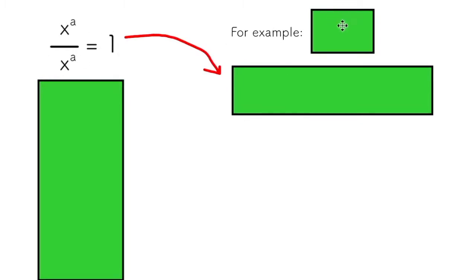I know this because, for example, if I take any number like four and I divide by itself, I'm going to get one. So, for example, two to the power of two is four, and if I divide that by itself, I get one.